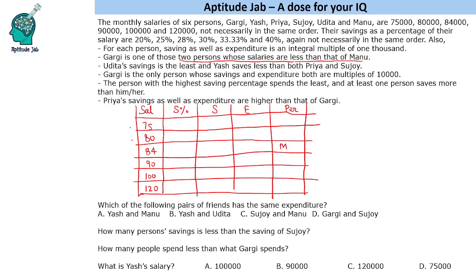Another clue: Gargi is the only person whose savings and expenditure are both multiples of 10,000. Since Gargi's salary is either 75k or 80k, we need both savings and expenditure to be multiples of 10,000. Her salary itself must be a multiple of 10,000, so it has to be 80,000. Now we check which saving percentages applied to 80,000 give multiples of 10,000.